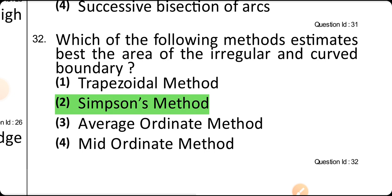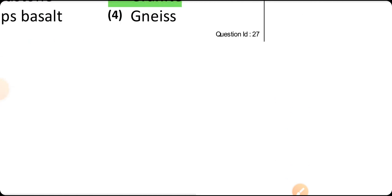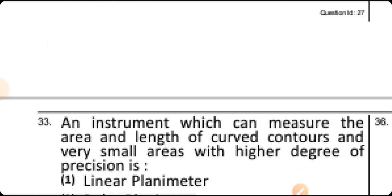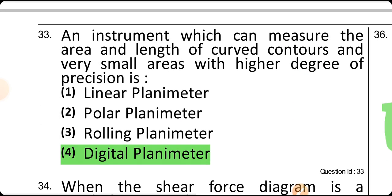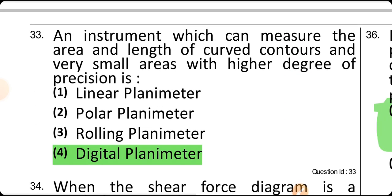Which of the following methods best estimates the area of an irregular and curved boundary? Simpson's method. An instrument which can measure the area and length of curved contours and very small areas with a high degree of precision is a digital planimeter.